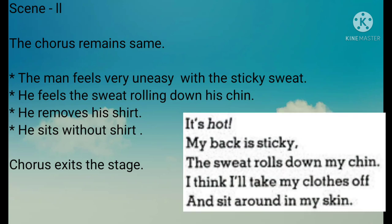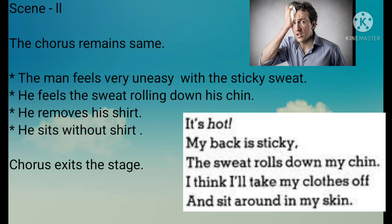Scene Two: the second stanza — 'It's hot, my back is sticky, the sweat rolls down my chin, I think I'll take my clothes off and sit around in my skin.' As the action takes place in the same location, chorus remains the same. The man feels very uneasy with the sticky sweat. He feels the sweat rolling down his chin. He removes his shirt. He sits without shirt. Chorus exits the stage. Note: you have to show the action of the subject — you cannot show adjectives by giving only helping verbs acting as main verbs; you have to show a little action for the character.